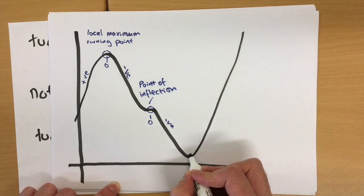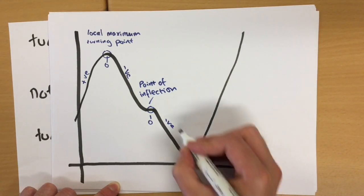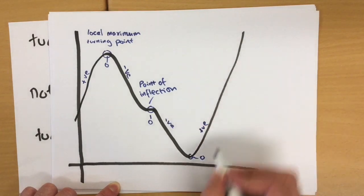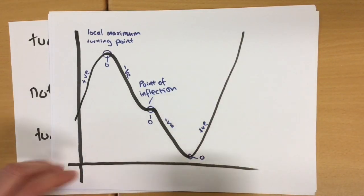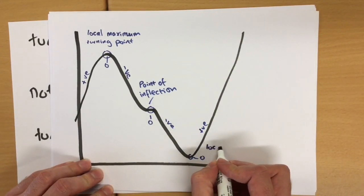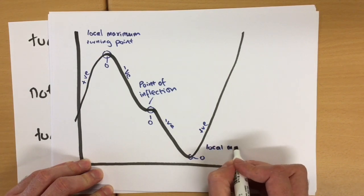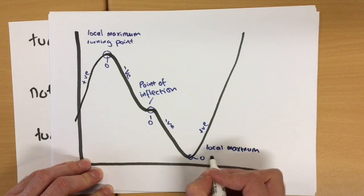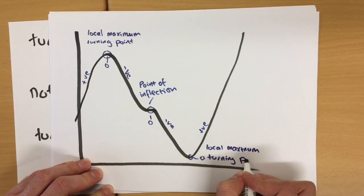And finally, as you can see, there's a point down here. The gradient is also zero, going from negative into a positive gradient again. And as you can probably guess, this is indeed the local maximum turning point.